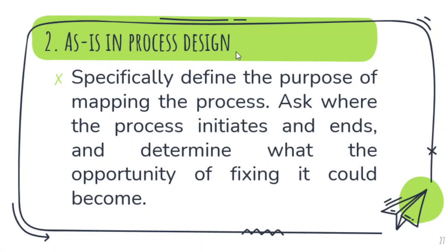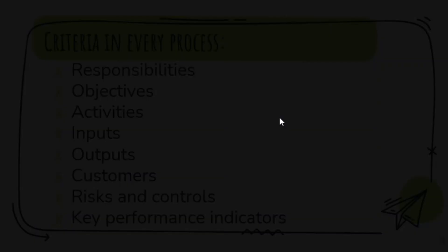The second step is to ask where the process initiates and ends, and determine what opportunities for fixing it could become. After selecting the process, determine all the steps, inputs and outputs, and establish the system, roles, and time involved — who is doing each task. Then you have to select a mapping technique and interview the contributors for their roles in the process, looking at every duty and decision point, and observe whether they can really complete the process within a given time, for example 30 minutes or 1 hour.